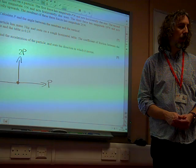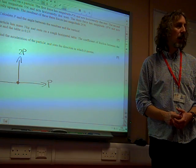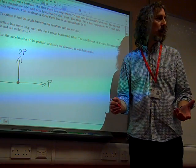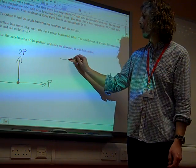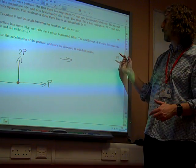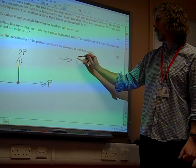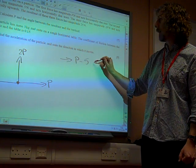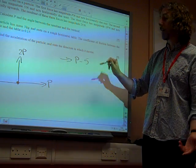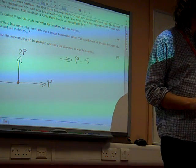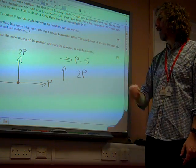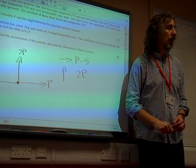The resultant of these three forces has a magnitude of 25 newtons. As soon as we start talking about a resultant, I want to resolve in my two directions. We're going to pick our two perpendicular directions and start resolving. If we resolve due east, we've got P minus 5. If we resolve vertically, we've got 2P as the resultant force in the vertical direction.